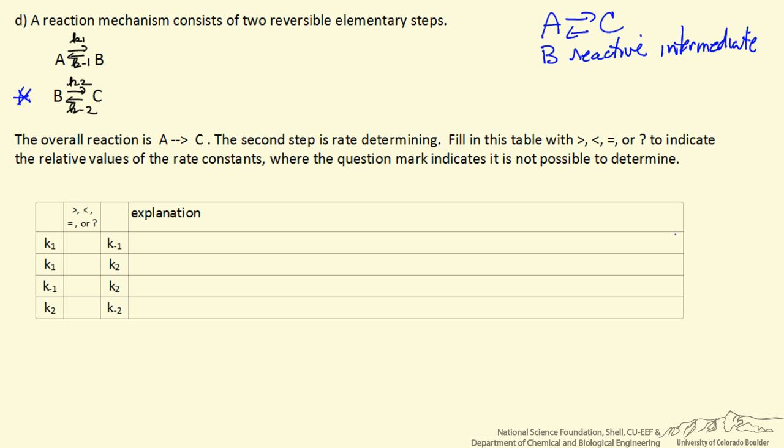One way of looking at that is, because the steady state approximation applies, the concentration of B is assumed to not change with time. If we were to draw arrows to represent rates, we could represent this as rate 1, this forward step, and then this as rate minus 1, the reverse step. This is close to equilibrium, quasi-equilibrium, because the other step is the rate determining step.